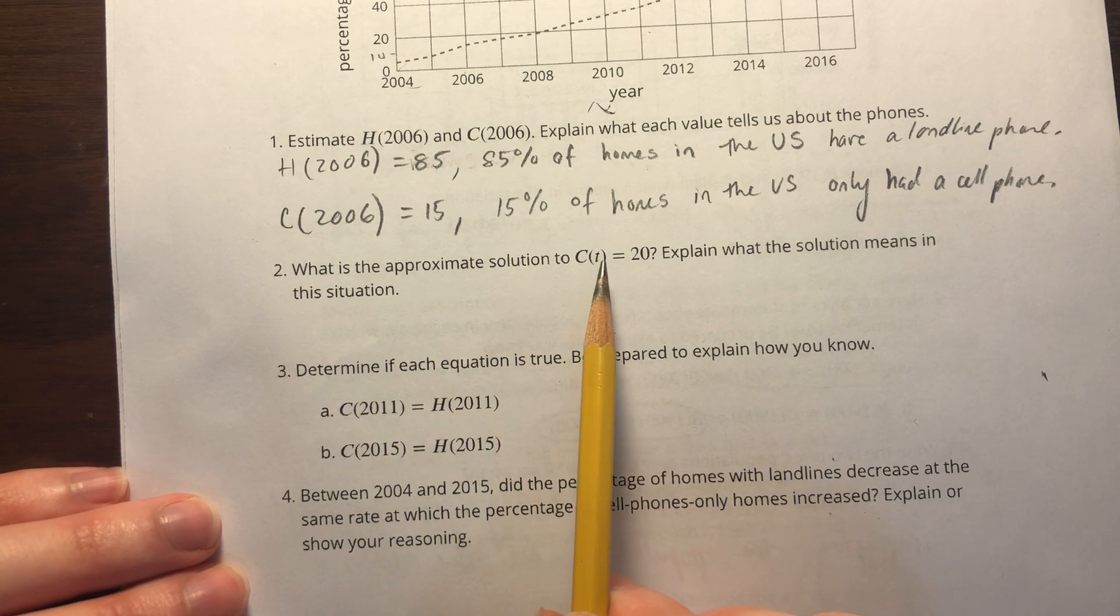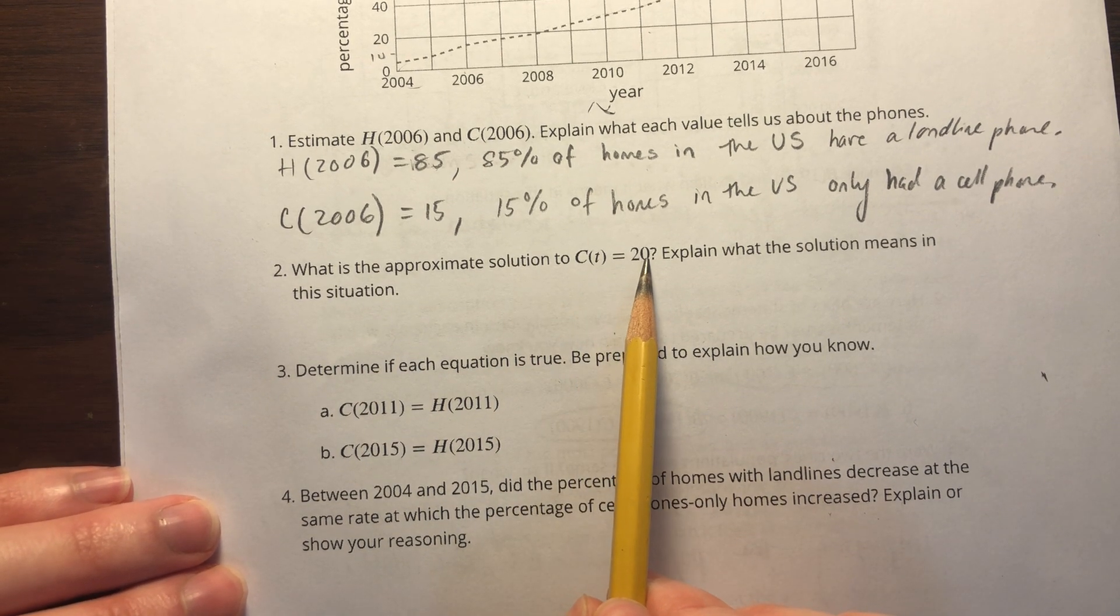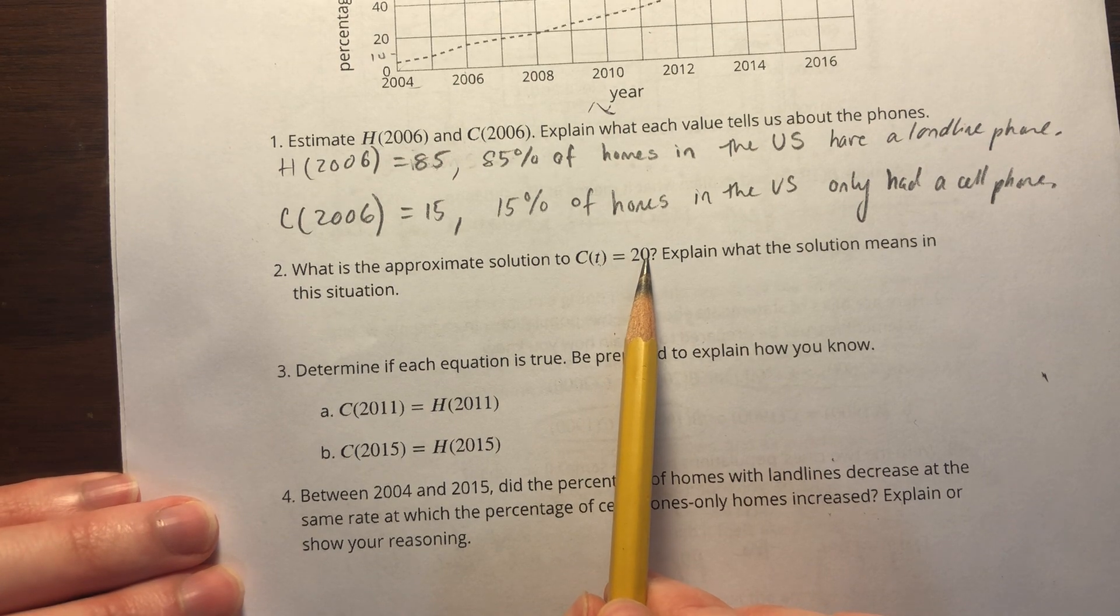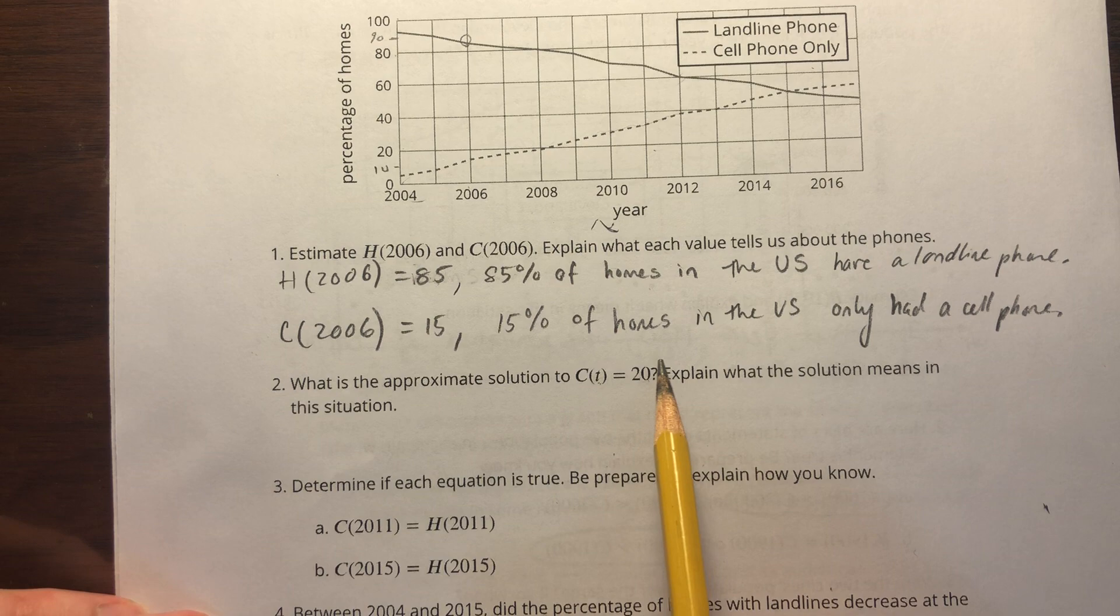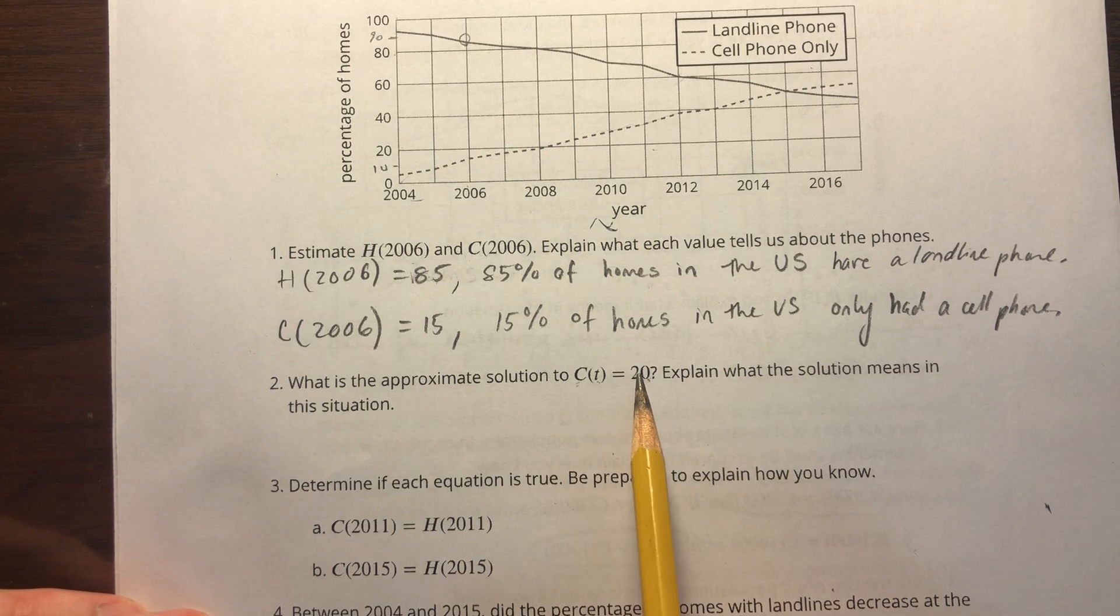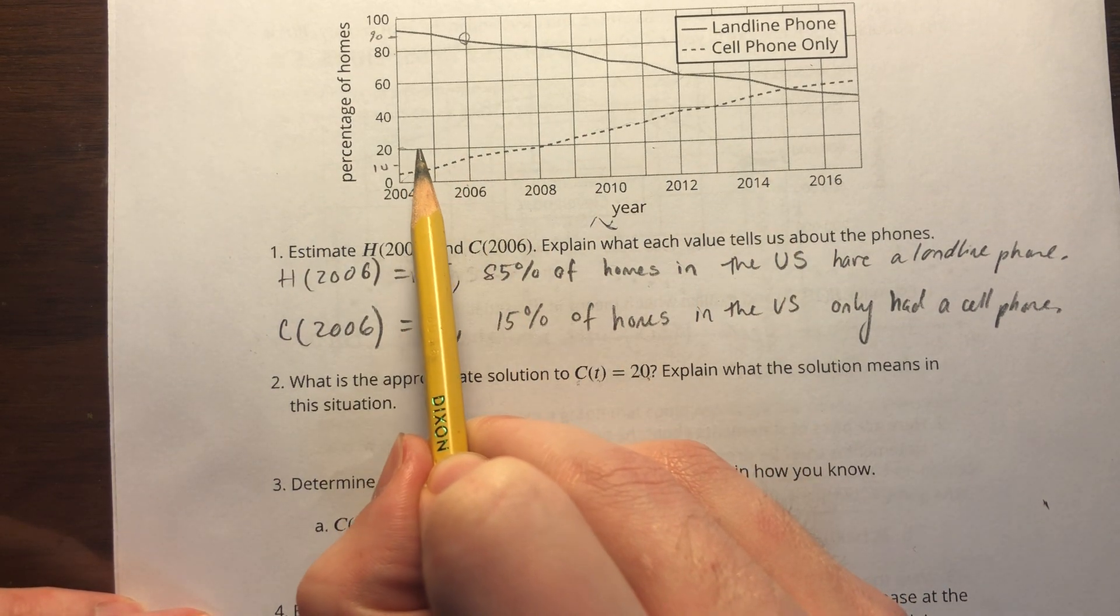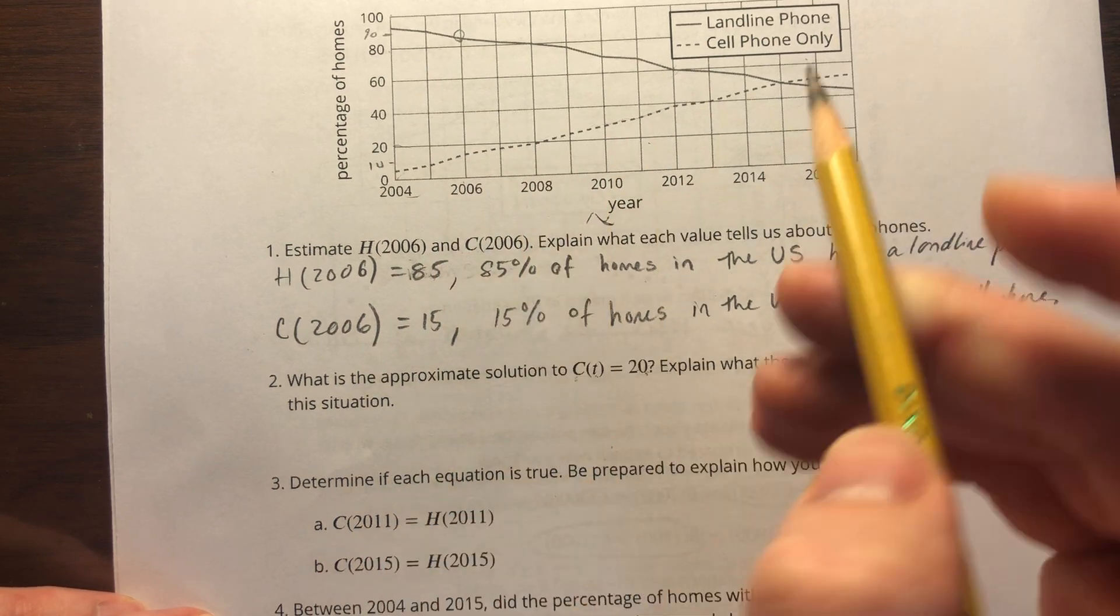What is the approximate solution to C(t) = 20? At what time did 20% of the United States only have a cell phone? If I look at 20, because we're looking at a y value now, C(t) = 20 means y = 20. So I'm going to follow this line across.